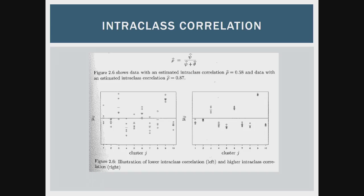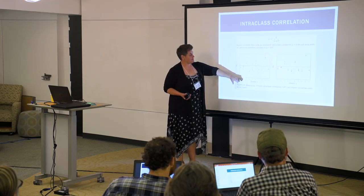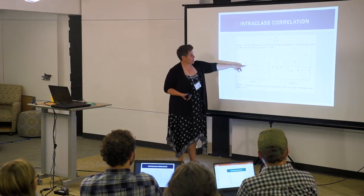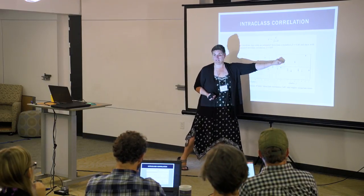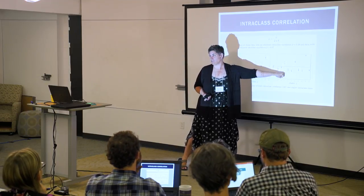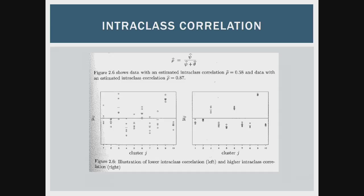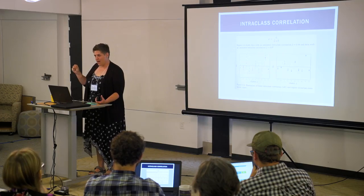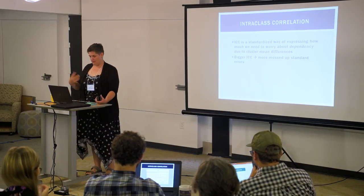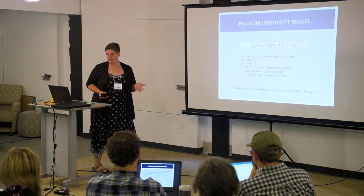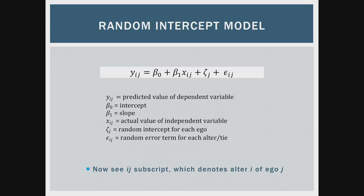Here visually: each cluster is an ego and these are the alter observations around the ego. On the left we have a low rho — observations differ quite a bit around the ego's average. On the right they're tightly clustered, so we'd have a higher intra-class correlation. The more tightly clustered things are, the more we have to worry about our standard errors being messed up. In the formula, instead of one error term with one subscript, I now add a zeta — but it's still the exact same pile of variance.